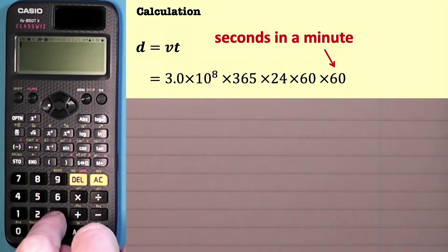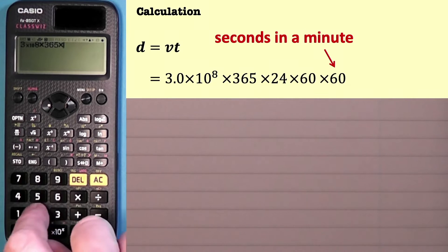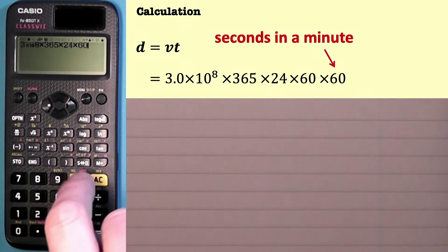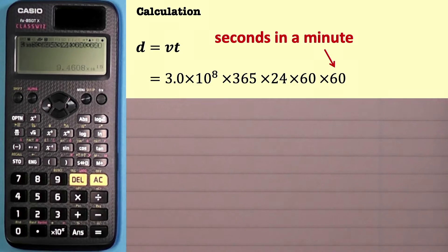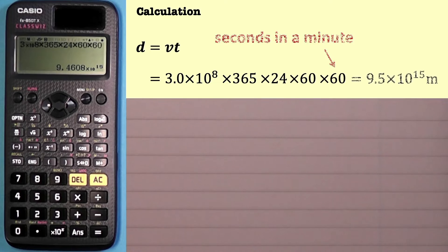So, 3 times 10 to the power of 8, multiplied by 365 times 24 times 60 times 60, gives us 9.4608 times 10 to the power of 15 meters. I'm going to round this because the speed of light in the data sheet is written to two significant figures — 3.0 times 10 to the power of 8 meters per second — so I'll round this value to two significant figures as well.